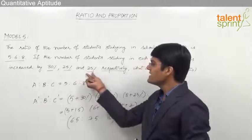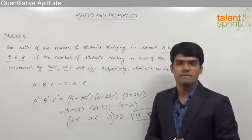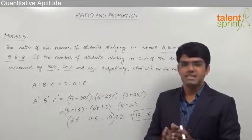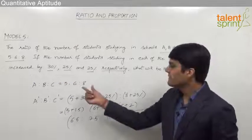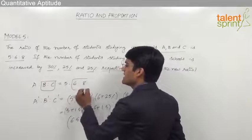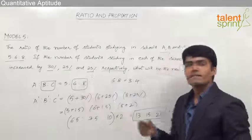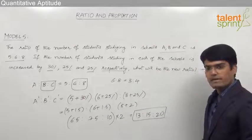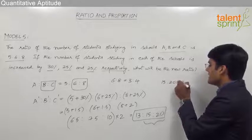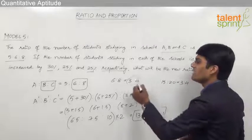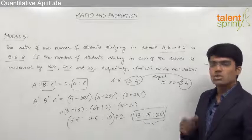One important point: the percentage changes in B and C are the same — both increased by 25%. Remember, whenever the percentage changes are the same, the ratio will not change. From the old ratio, B:C was 6:8, which simplifies to 3:4. After increasing both by 25%, the new ratio of B:C is 15:20, which also simplifies to 3:4. So very clearly, whenever the percentage changes are the same, the ratio will not change.